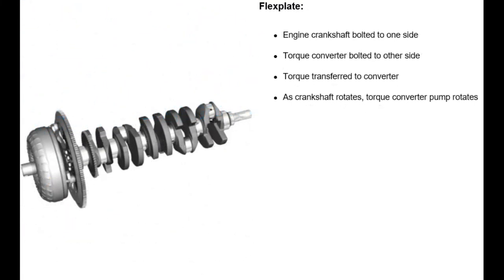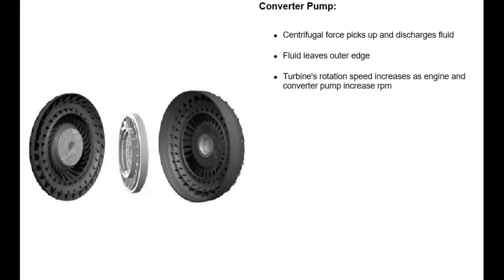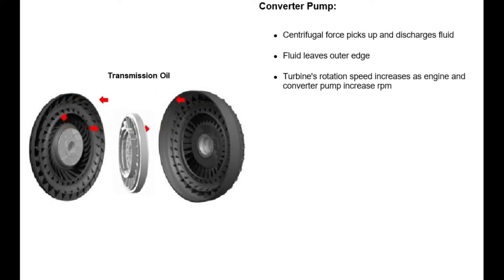The engine crankshaft is bolted to one side of the flex plate while the torque converter is bolted to the other side. Engine torque is transferred to the torque converter through the flex plate. As the crankshaft rotates, the torque converter pump begins to rotate. As the converter pump rotates, centrifugal force picks up fluid at the pump's center and discharges the fluid at the outside rim of the pump.